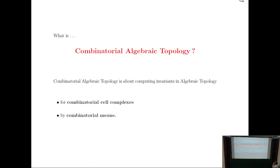So this will be a two-slide talk. In combinatorial algebraic topology, one also wants to compute invariants, but we want to compute the combinatorial and algebraic invariants for what we call combinatorial cell complexes, and usually the ways we compute them are combinatorial.